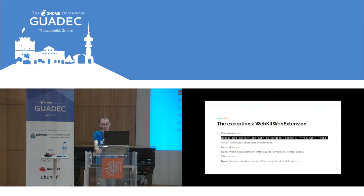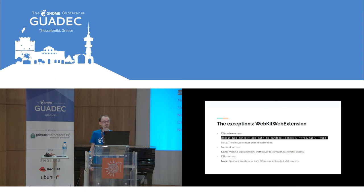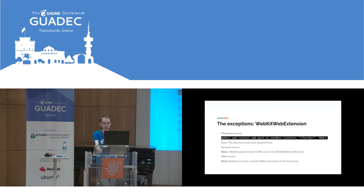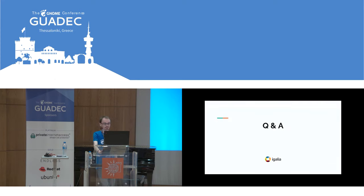Another thing Epiphany did was talk to libsecret to get passwords on the host, which is of course not acceptable. So Epiphany has a private D-Bus connection between the UI process and the web extension. We filter access to the passwords — the web extension will ask for passwords, the UI process checks whether it should actually have access, and safely returns just the passwords relevant for that website.